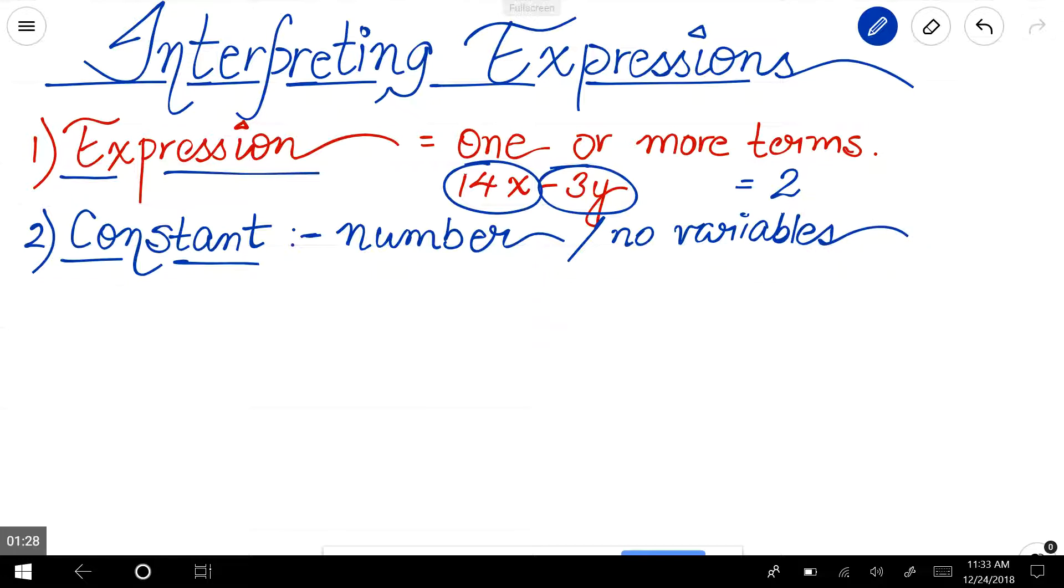By that I mean an example could be 3x squared minus 7. So what is the constant term here? Negative 7. The constant is negative 7 because it does not have any variable. It's just a number.